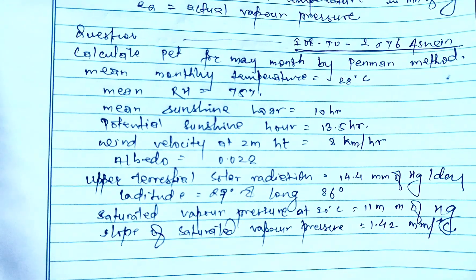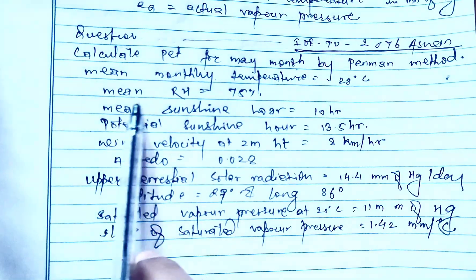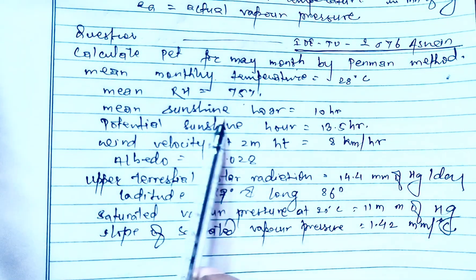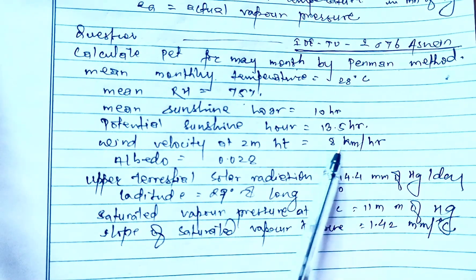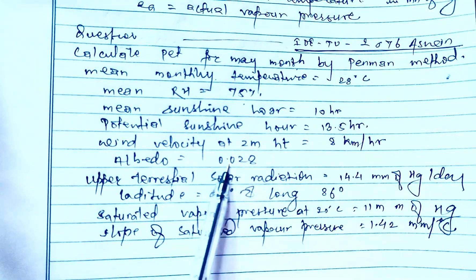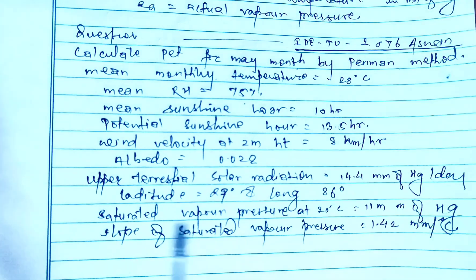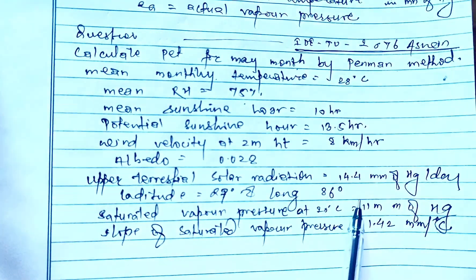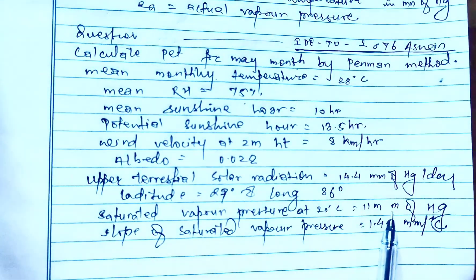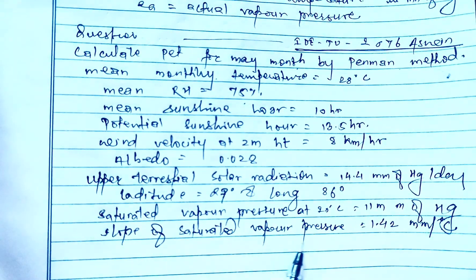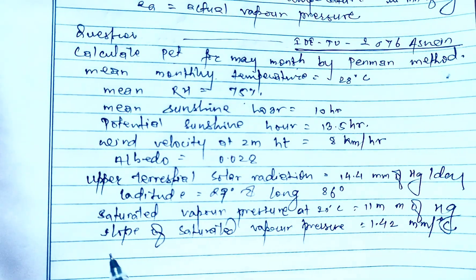The given question is: Calculate PET for the month of May by the Penman method, where mean monthly temperature equals 28°C, mean relative humidity equals 75%, mean sunshine hours n equals 10 hours, potential sunshine hours N equals 13.5 hours, wind velocity at 2 meter height equals 8 km/hr, albedo R equals 0.028, extra-terrestrial solar radiation Ha equals 14.4 mm of Hg per day, latitude 27°, longitude 86°, saturated vapor pressure at 20°C equals 11 mm of Hg, and slope of saturated vapor pressure A equals 1.42 mm per degree Celsius.